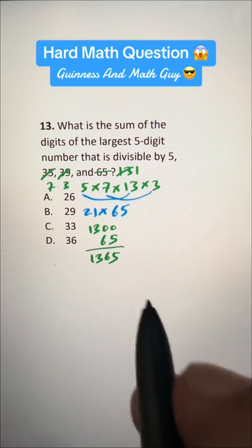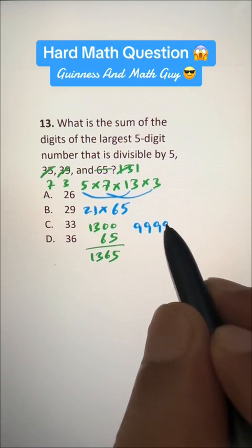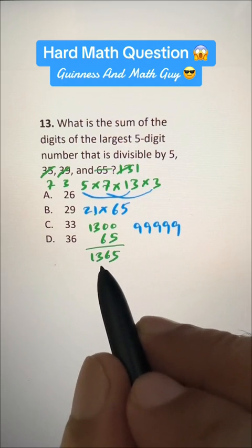Now, overall, the largest 5-digit number is 99999, right? And let's see if this is divisible by 1365.